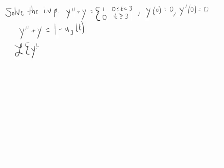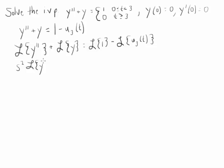So now we're taking the Laplace transform of everything. When we do this we're going to get s squared times the Laplace transform of y. Notice that since y of zero and y prime of zero are both equal to zero, there's no extra terms there.